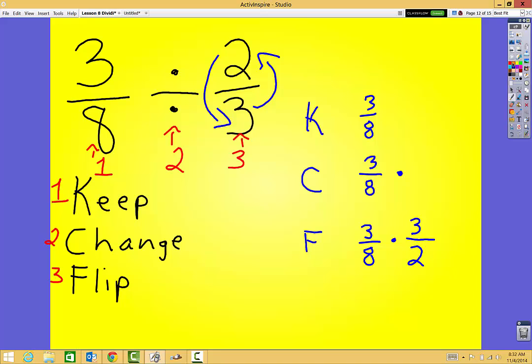And then I'm ready to solve my problem. So how do I solve it? Well, I remember when I multiply fractions, I just multiply my numerators, so three times three is nine. And I just multiply my denominators, eight times two, that is 16.